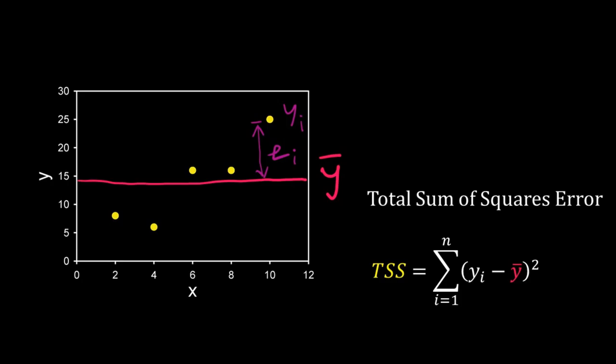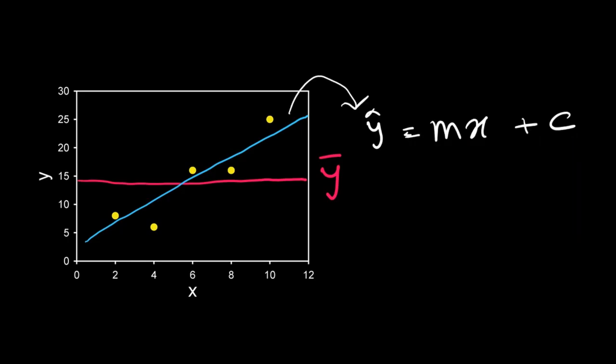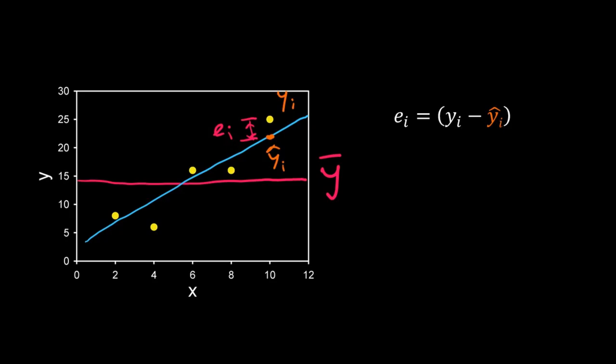Now we have fitted the linear model. We got it by linear regression. Here y is linearly dependent on x. Suppose the equation of this blue line that is obtained by linear regression is ŷ equal to mx plus c. When x equal to xi, ŷ is equal to ŷi. What is the error in this linear model for the point (xi, yi)? The error is yi minus ŷi.